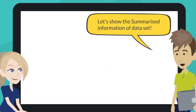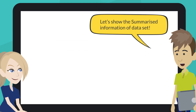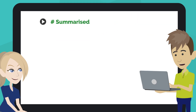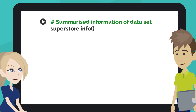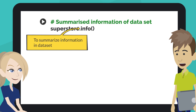Then let's show the summarized information of the dataset. Type the code like this into the next code cell of your notebook. This code summarizes the information in the dataset. The Pandas DataFrame.info function prints information about the DataFrame, including the number of columns, column labels, column data types, memory usage, range index, and the number of cells in each column.